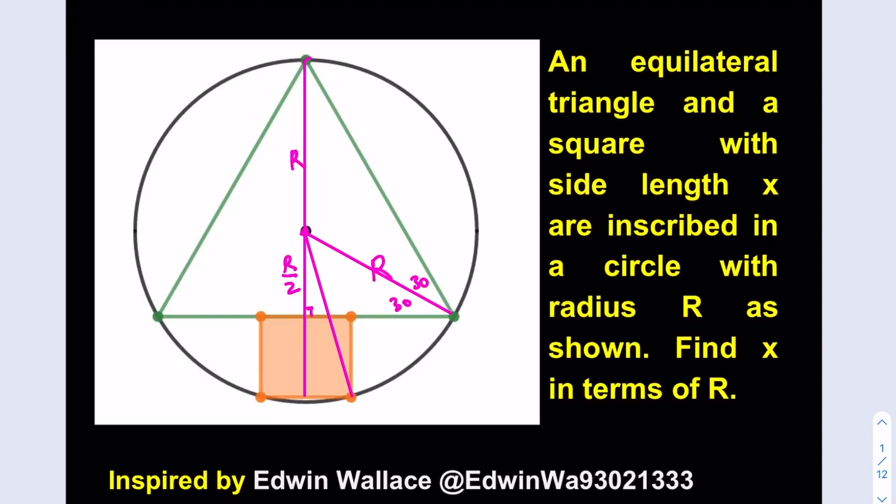The base of this triangle should be the longer leg which is r root 3 over 2. Now we know that the side length for the square is x so this will be x over 2 and this will also be x over 2. Let's find the side length of the equilateral triangle first.